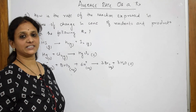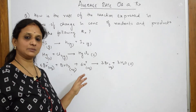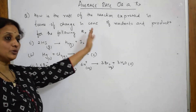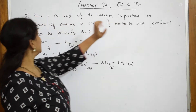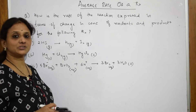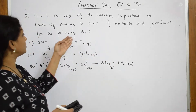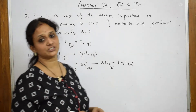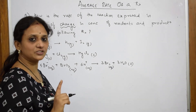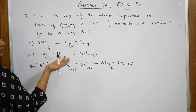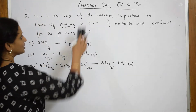We have seen how to write the rate of reaction or average rate of reaction. Now this question is mostly seen in papers: 'How is the rate of reaction expressed in terms of change in concentration of the reactants?' As soon as you see 'change in concentration,' they are speaking in terms of delta. They have not mentioned average rate explicitly, but you can directly relate it to average rate or rate of reaction.